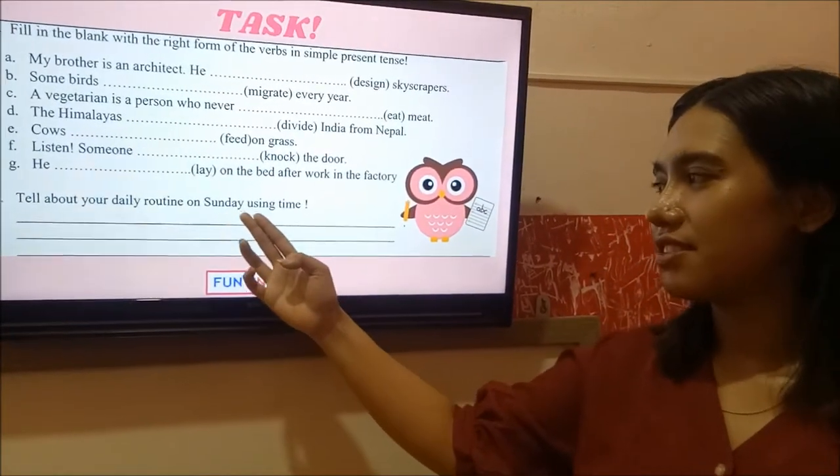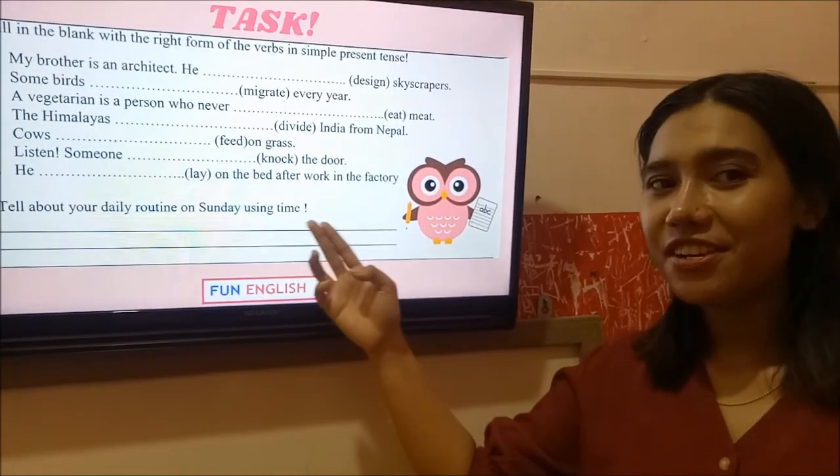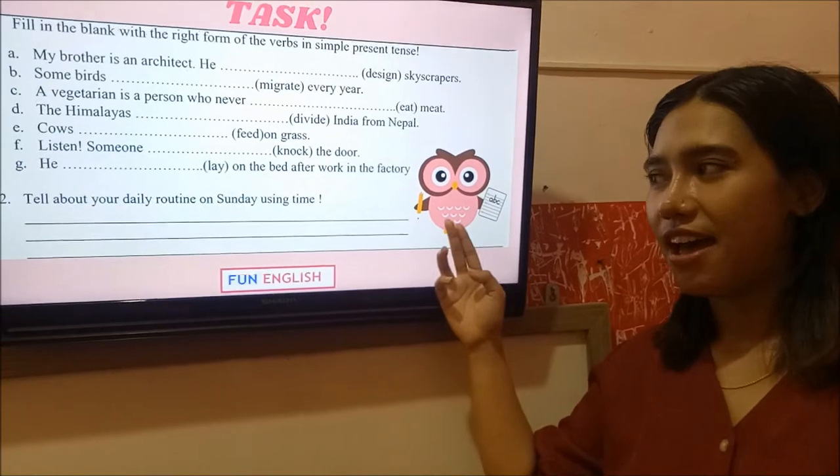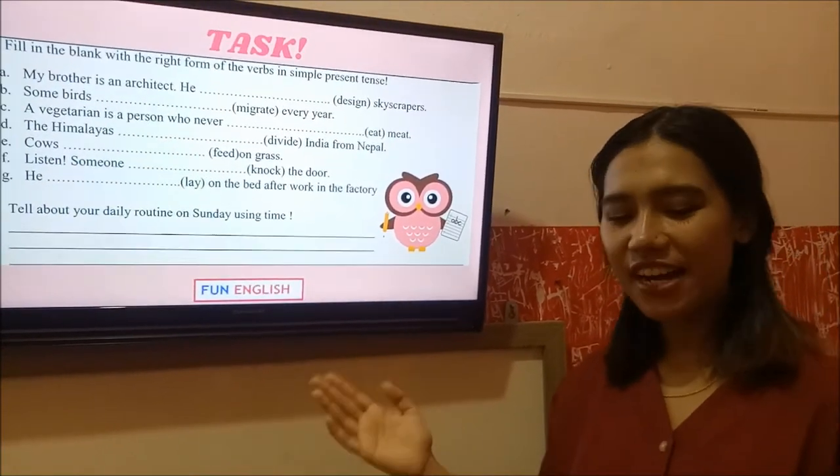And also this one. Tell about your daily routine on Sunday using time. For example, every day I go to blah, blah, blah. At 6 p.m. I blah, blah, blah. Something like that. Easy, right?